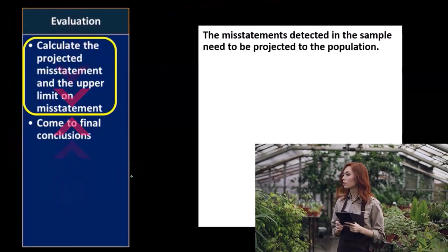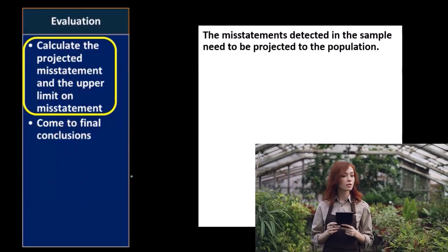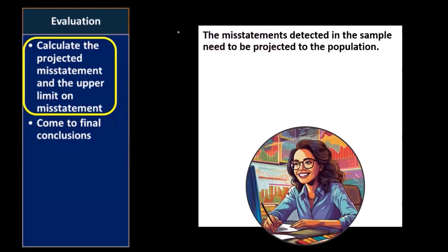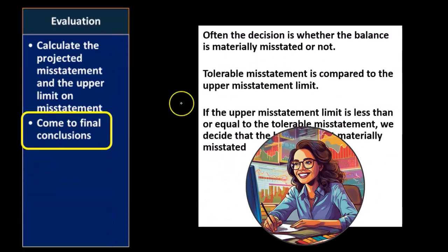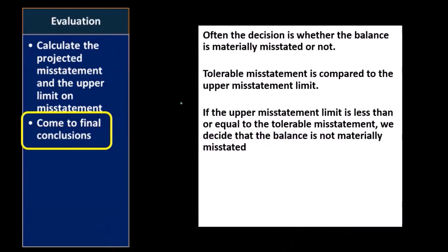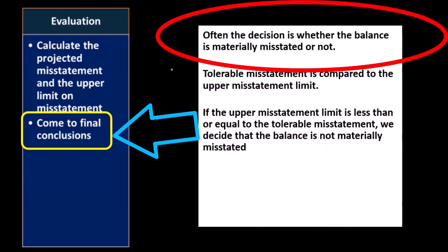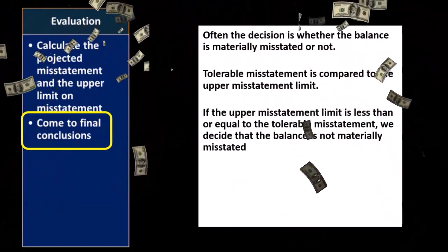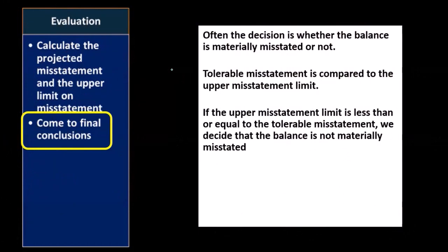Next we have the evaluation phase. Once we've gone through the performance phase, we calculate the projected misstatement and the upper limit on misstatement. The misstatements detected in the sample need to be projected to the population. Then we come to a conclusion based on this process. Often the decision is whether the balance is materially misstated or not — typically considering something like accounts receivable or inventory on a dollar basis.